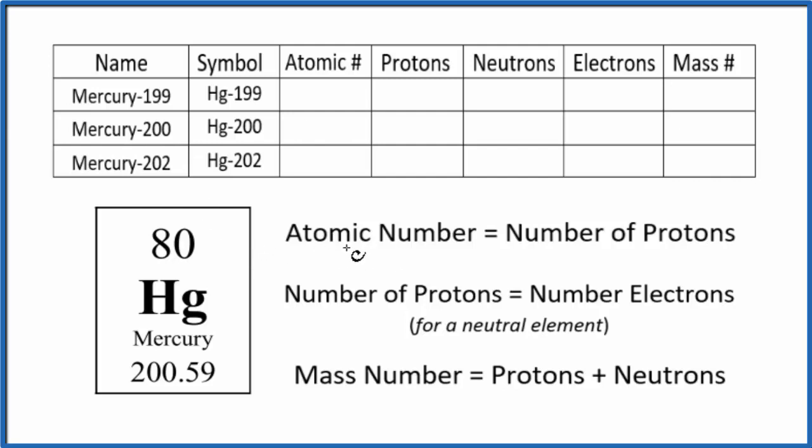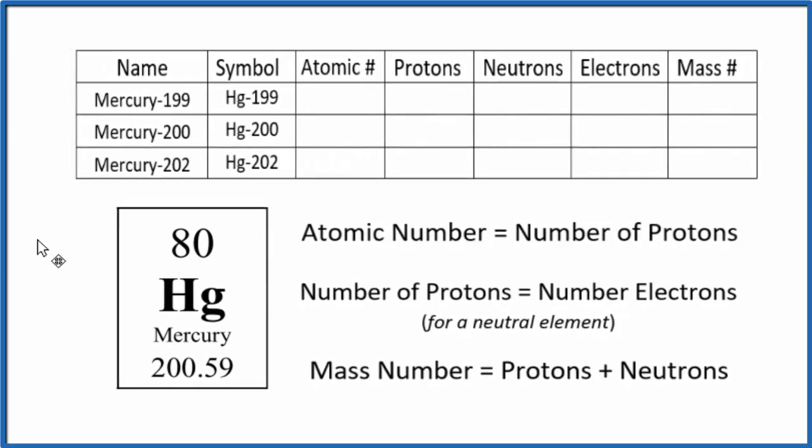By finding the atomic number, that's the number right here. So we have our atomic number and we can just write that in: 80. And that doesn't change. It doesn't matter what isotope of mercury you have, you're going to have an atomic number of 80. And since the atomic number equals the number of protons, we'll have 80 protons for each isotope as well.